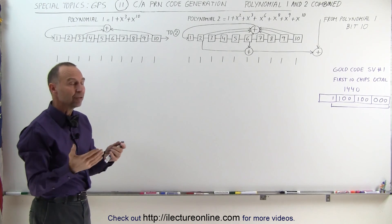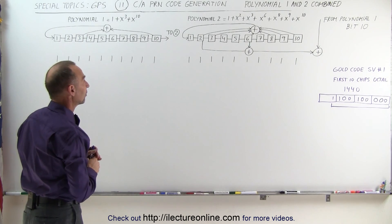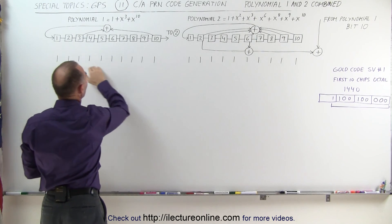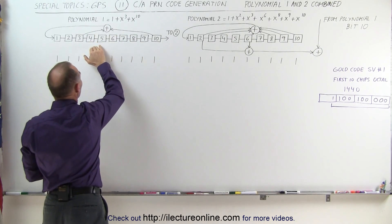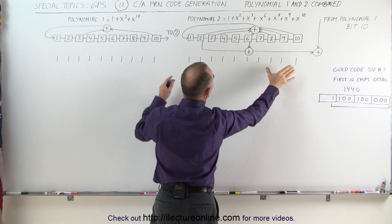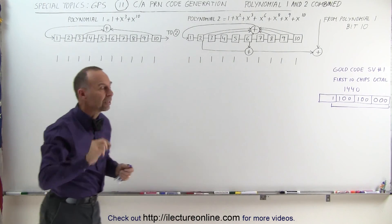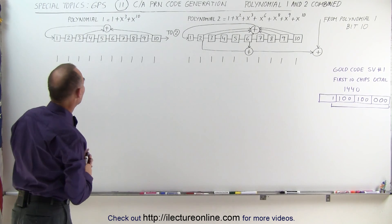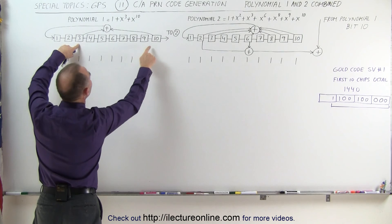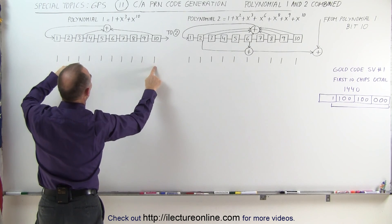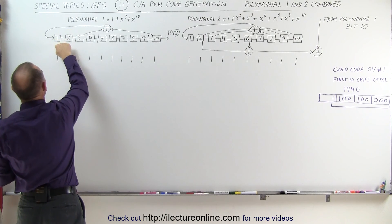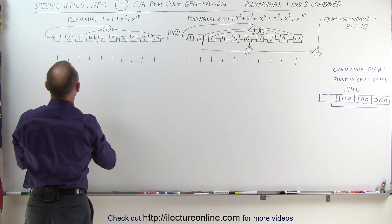How do we derive those? Let's go through the process. At the beginning of every millisecond, all the bit positions for polynomial 1 and all the bit positions for the next register will all be set equal to 1, and then the process starts. We combine 3 and 10 — they're both equal to 1. 1 plus 1 is 2, which is even, so it becomes a 0. That gets placed into this register, and everything else shifts over.